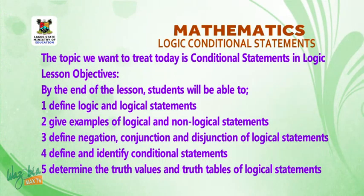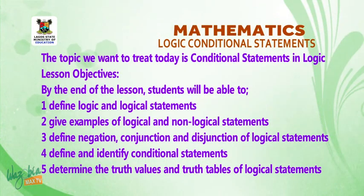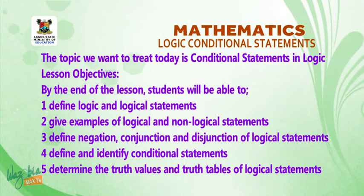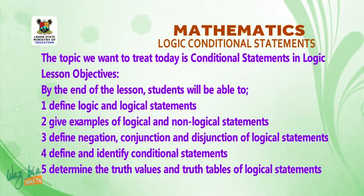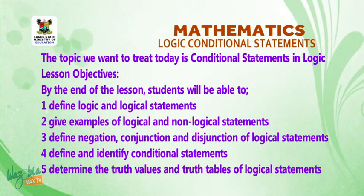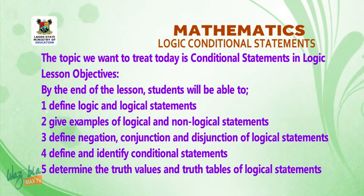Lesson objectives are as follows. By the end of the lesson, students will be able to: one, define logic and logical statements; two, give examples of logical and non-logical statements; three, define negation, conjunction, and disjunction of logical statements; four, define and identify conditional statements; five, determine the truth values and truth tables of logical statements.